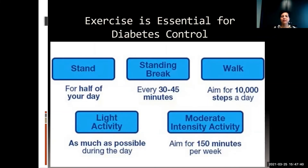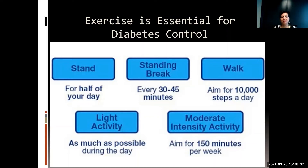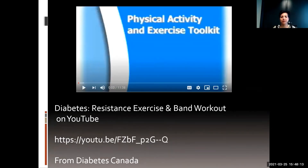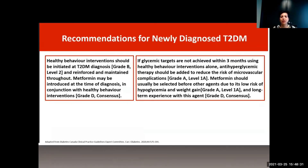Try to stand for at least half the day. Take a short break about once an hour. Aim for a minimum of 10,000 steps, but 14,000 to 16,000 steps for some weight loss. Try light activity during the day such as walking, mild housework, and gardening, with moderate to intense activity for at least 150 minutes per week. The Diabetes Canada website has a workout link you can click on to exercise along with.